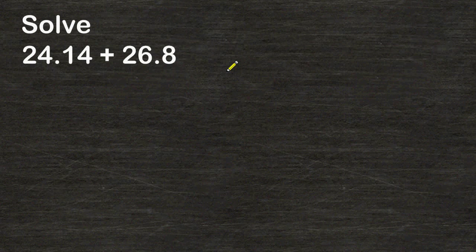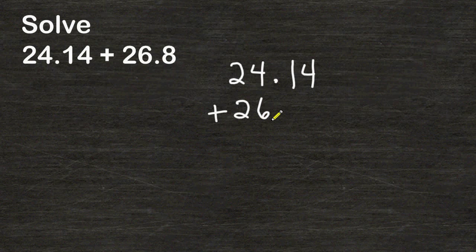So let's try one more example. First, we are going to write 24 and 14 hundredths. If you ever have a blank space, just add a zero to hold that place value.